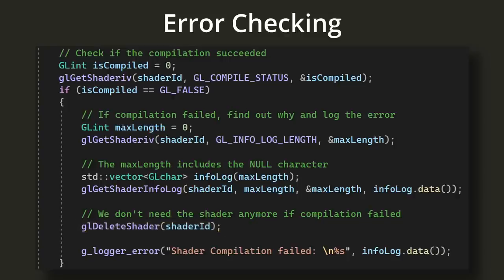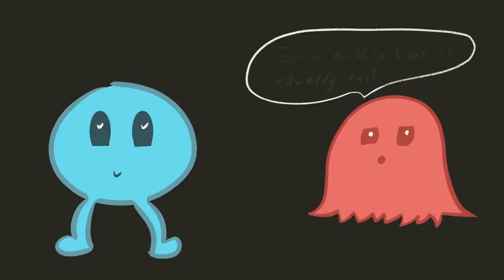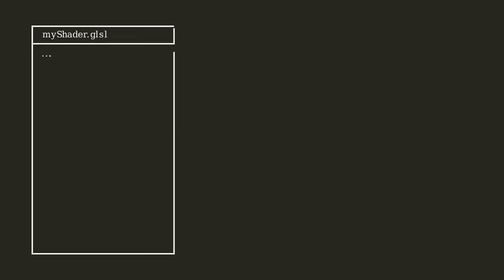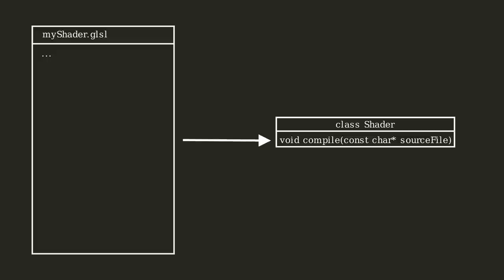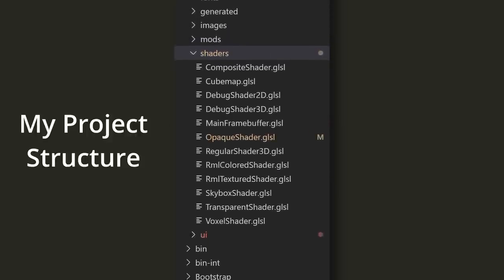I'm using a custom library for memory management and logging — any function prefixed with 'g_' is part of my library, where G stands for Gabe. We can use all these steps to compile our vertex shader and fragment shader. Because the code is repetitive, I'd highly recommend abstracting this into a Shader class with compile and init methods. I'd also recommend reading shader source code from files, so shaders can be stored in separate files just like the rest of your code.